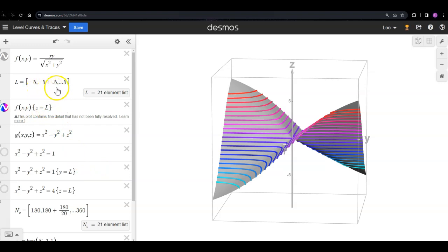Same thing at negative 4.5, at negative 4 all the way up, 0, 1, 2, 3, all the way up to 5. So I'm just looking at where those planes are going to intersect that surface.